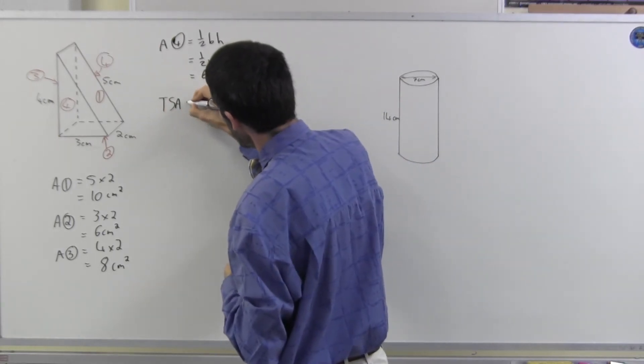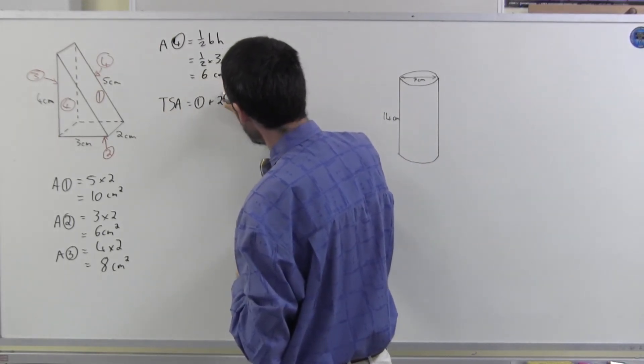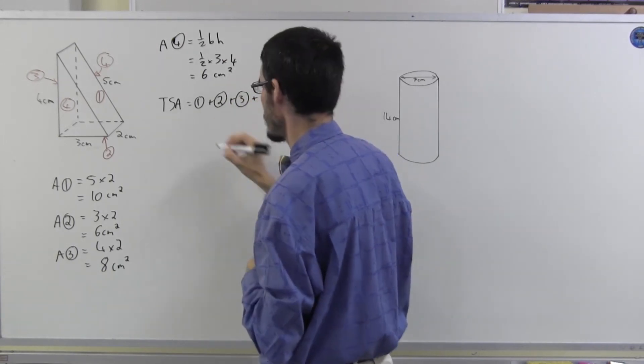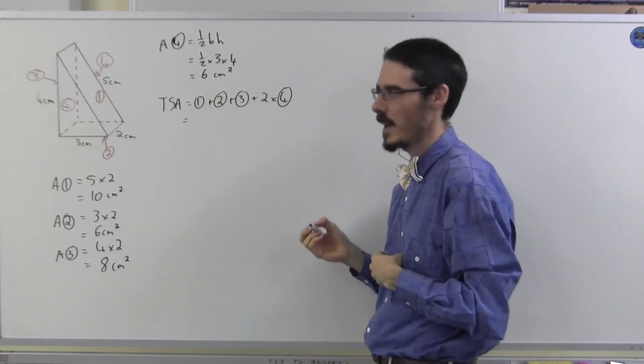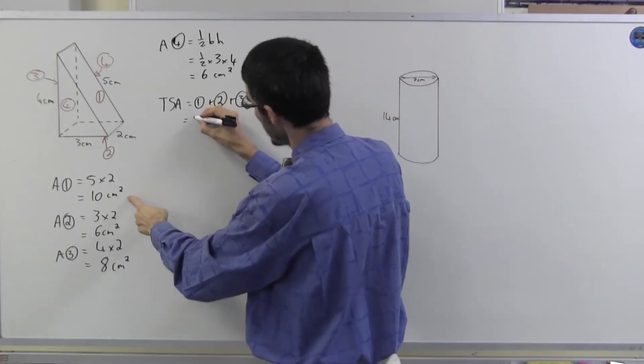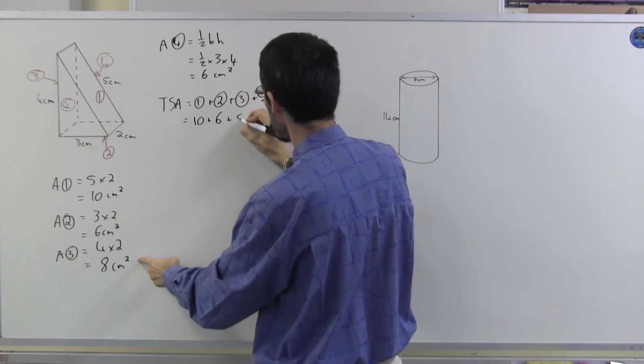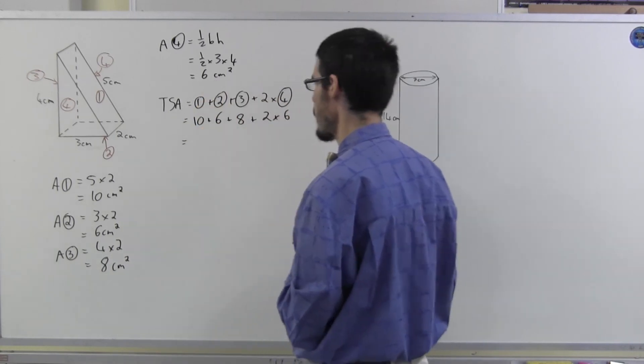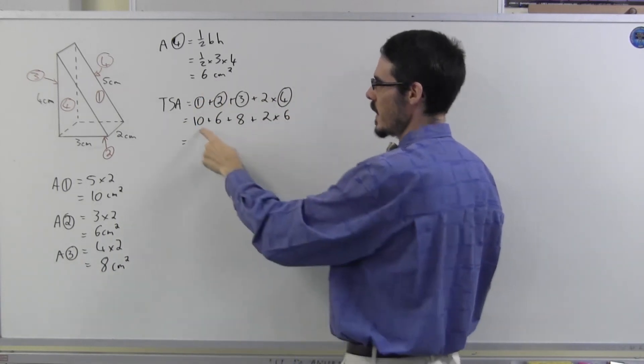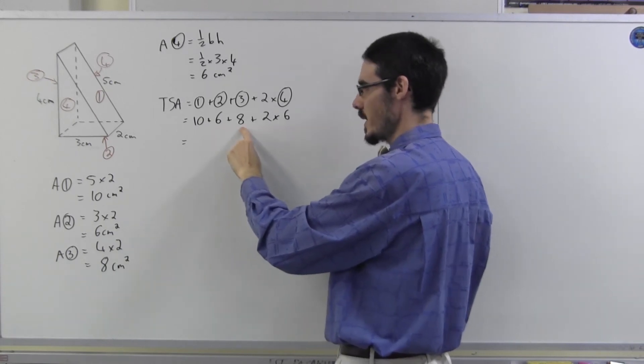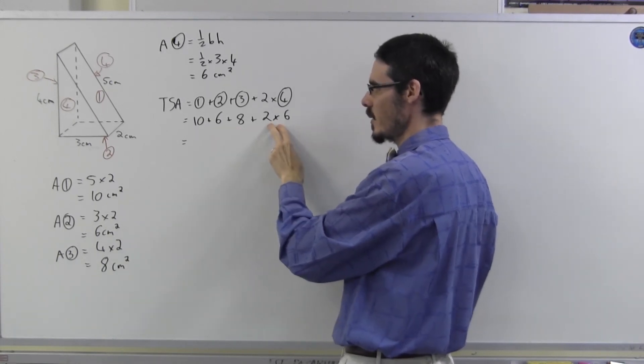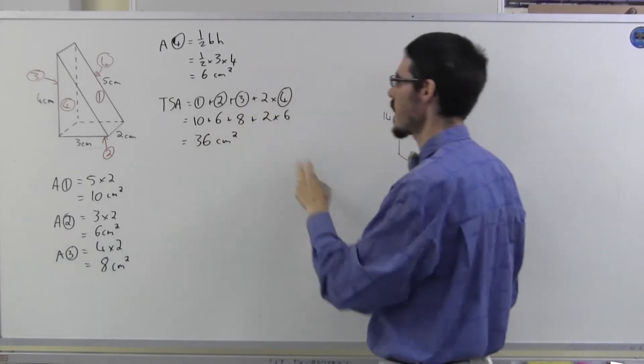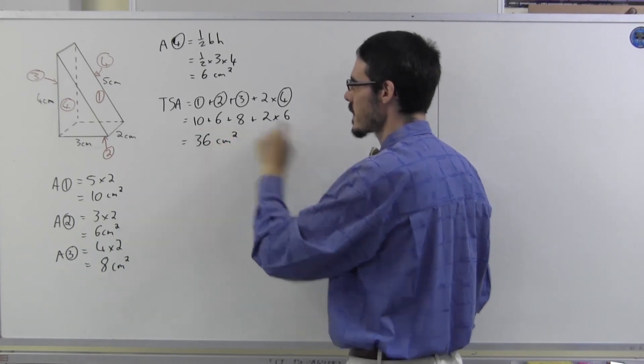So then my total surface area, one and two and three, and two lots of four. You don't have to write them all out, but let me do it just to make it clear. Ten plus six plus eight plus two lots of six. Can I do that in my head? Ten, sixteen, twenty-four, plus twelve is thirty-six. We'll check. Twelve, twenty, twenty-six, thirty-six.